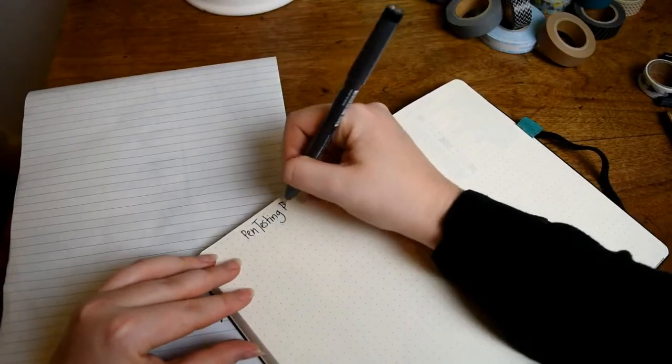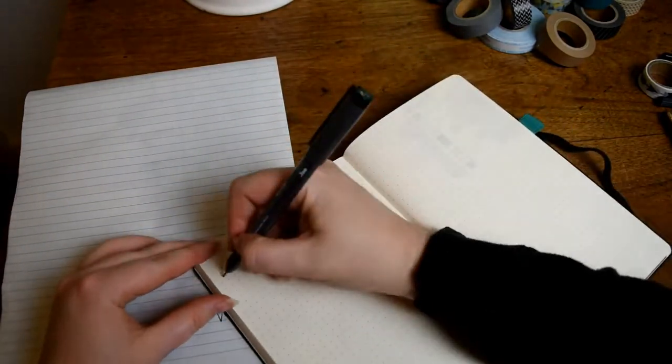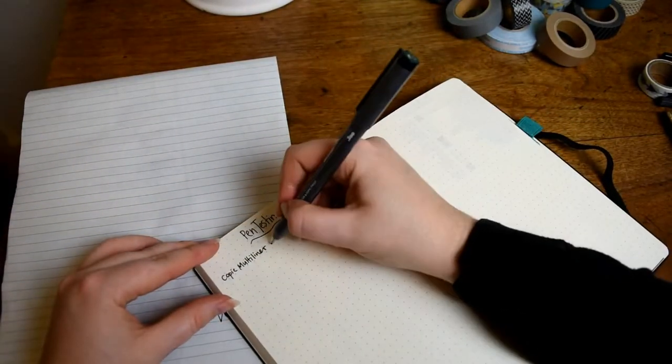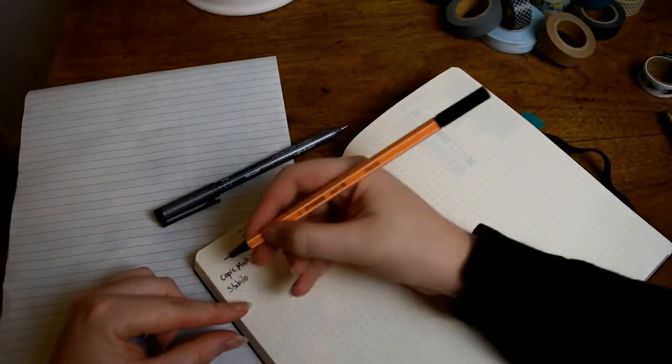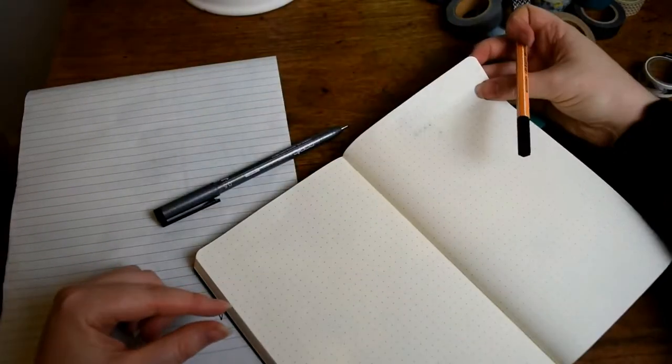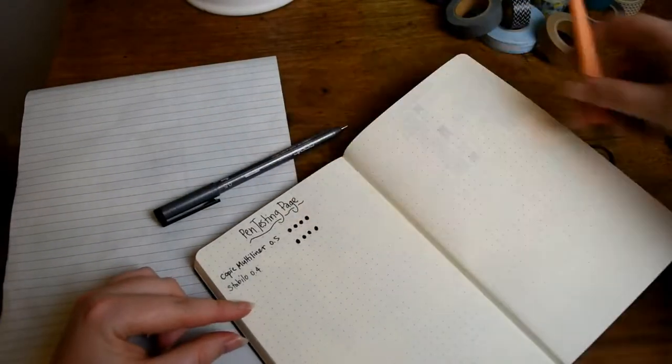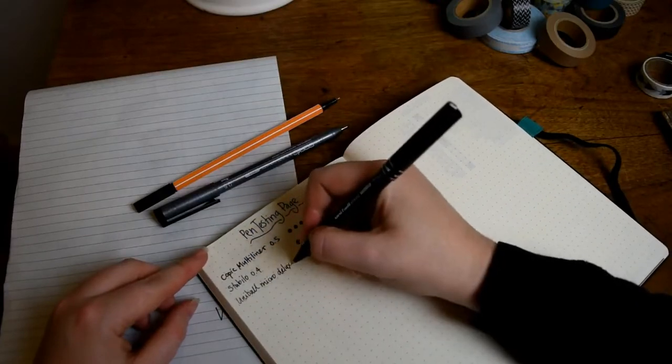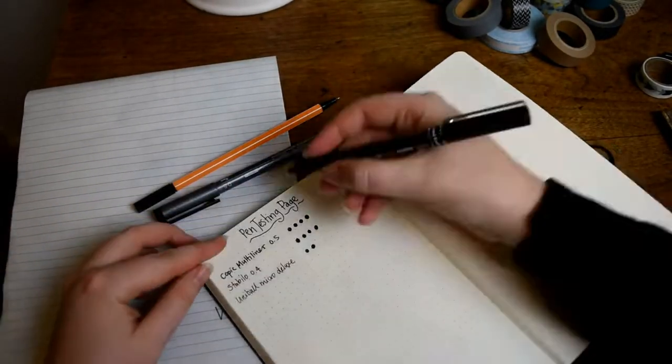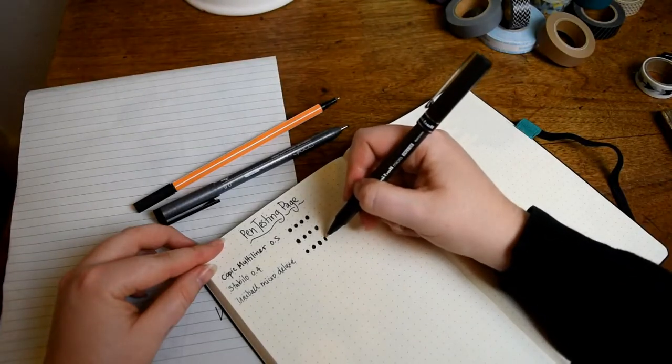First thing I do when I'm setting up a new notebook is to make sure to flip to the back of the book and create a test page for any pens that I think I might be using, to check whether they bleed through, how easy they are to write with, and what their size is. I'm testing a Copic multiliner in 0.5, a Stabilo in 0.4, and a Uni-Ball Micro Deluxe, and I ended up going with the Stabilo 0.4 size.